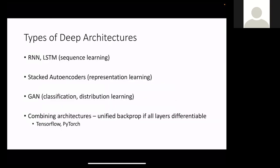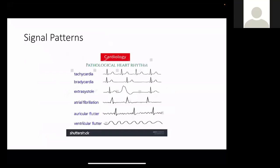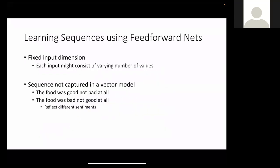That covers the feed-forward architecture. There are other types of architecture as well. The feed-forward CNN works well for vector or image inputs, but if you have a sequence — like a word, a sentence, or a time series — feed-forward networks don't work. The input size is fixed in a CNN or feed-forward network, and the sequence structure is not captured — only the values matter.